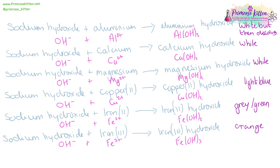If you're going to use sodium hydroxide to test for your positive ions, we need to look at the ionic equations and the precipitates. Testing for aluminum with sodium hydroxide is going to give you a white precipitate, which is then going to dissolve. Testing for calcium with sodium hydroxide is just going to give you a white precipitate, which will not dissolve.